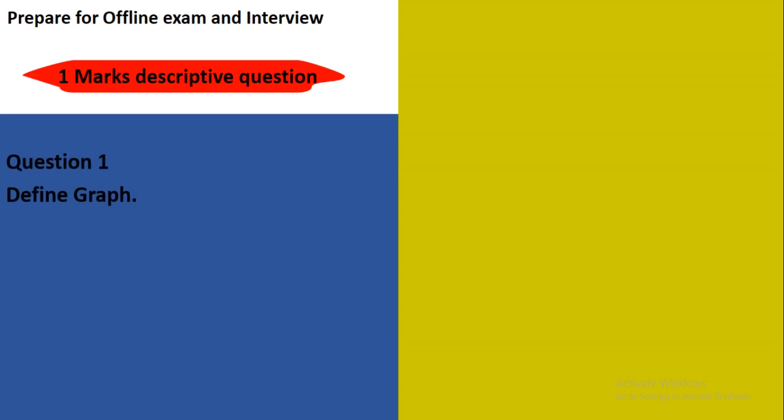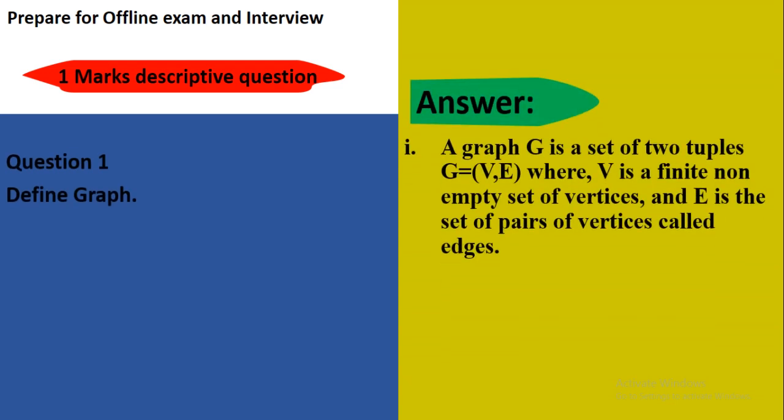Question number 1: Define graph. What is meant by graph? A graph G is a set of two tuples G equals to V comma E, where V is a finite non-empty set of vertices and E is the set of pairs of vertices called edges. Here is an example. Here is one graph G with different vertices and edges presents between 1 and 2, 2 and 5, 4 and 5.